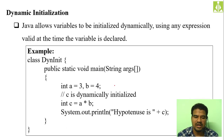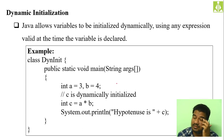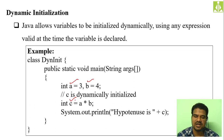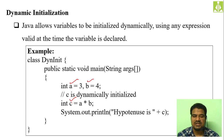Then dynamic initialization — not only initializing a variable with a constant but also dynamic initialization. For example, c's value is completely dependent on a and b values. As a and b values change, the c value will also change. The c value is not fixed; it is initialized dynamically — not statically. This type of dynamic initialization is also allowed in C and also allowed in Java.